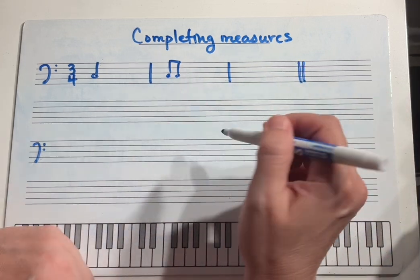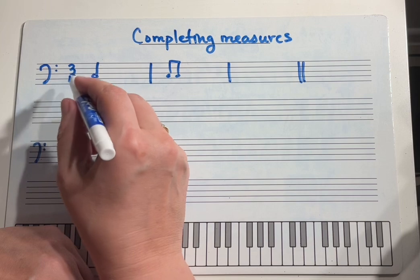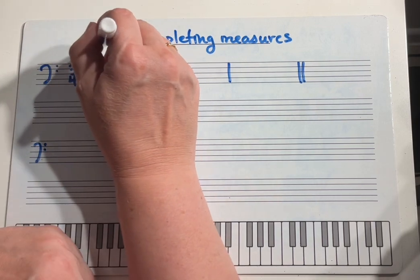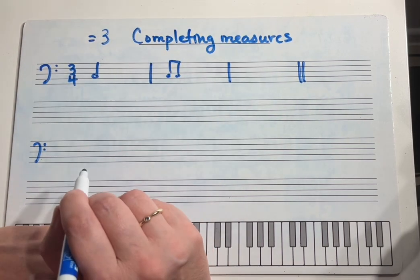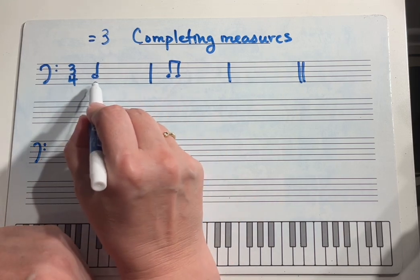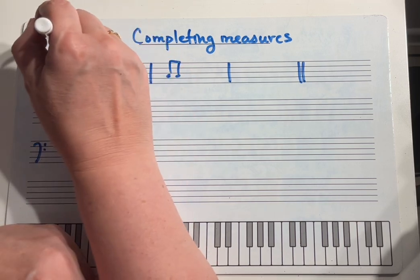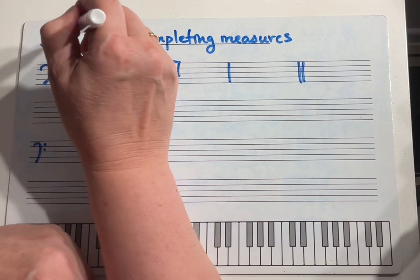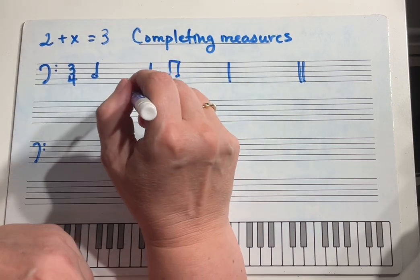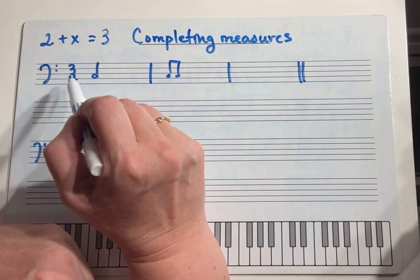you're actually doing a little bit of algebra. You know you want your measure to equal three beats. And if you look at this one, you know a half note is two beats. So then you have to figure out what am I going to put here that will equal x.